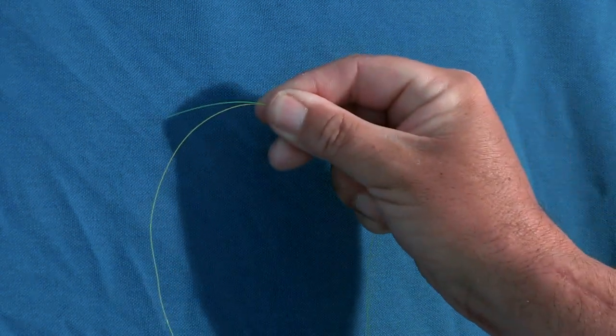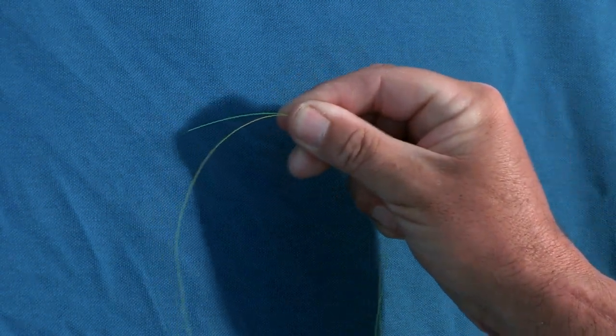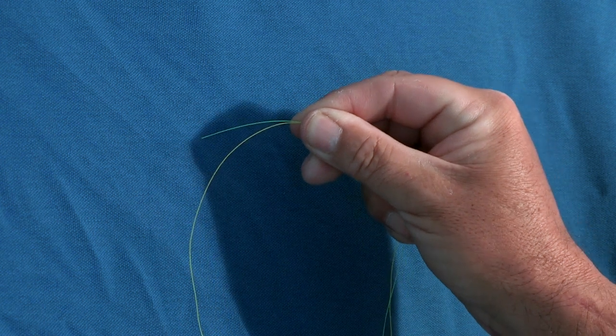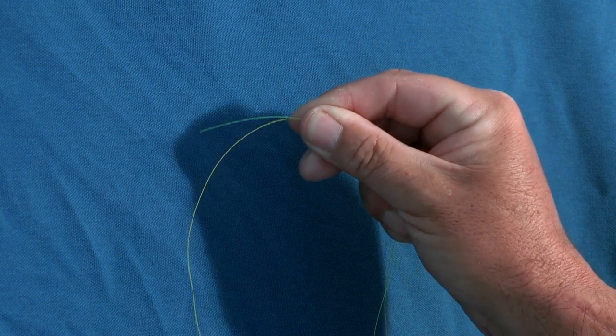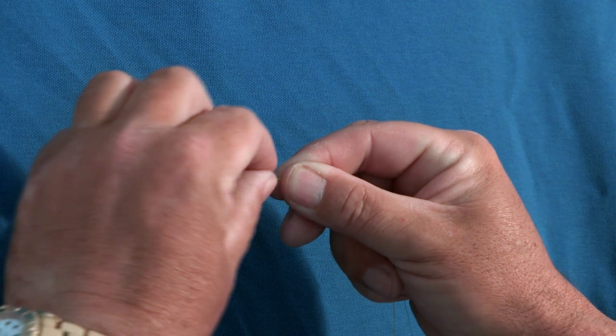I'm going to show you a little knot. Most people for droppers use a surgeon's knot. What I'm going to do is show you a knot that Ian Earle showed us. Main line is yellow, dropper's green, just easy enough to see.